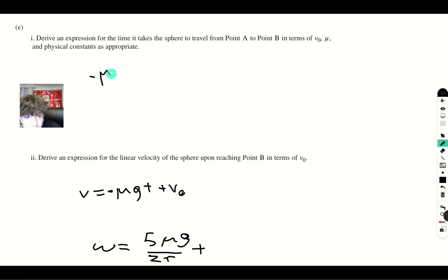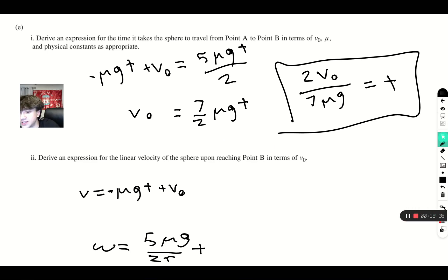So we'll get minus mu gt plus v initial equals this times r. So we'll get 5 mu gt over 2. From here, we can add this over. We'll get 7 halves mu gt equals v initial. And our final step is to get t all by itself. So we'll get 2 v initial over 7 mu g equals t. And there you have it. There's your expression for t. And let's take a look at the final part.